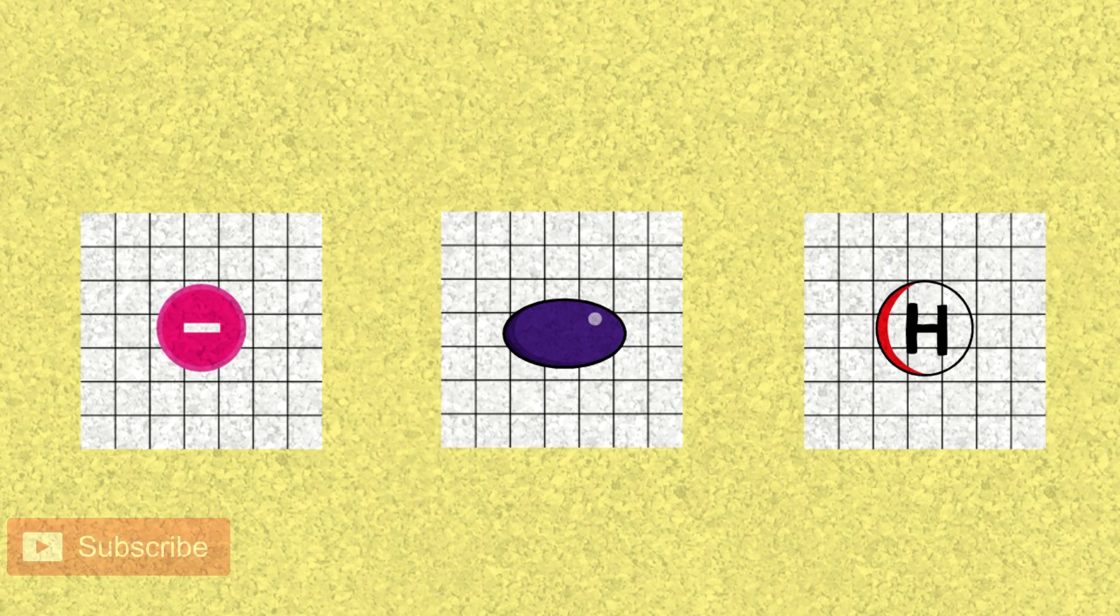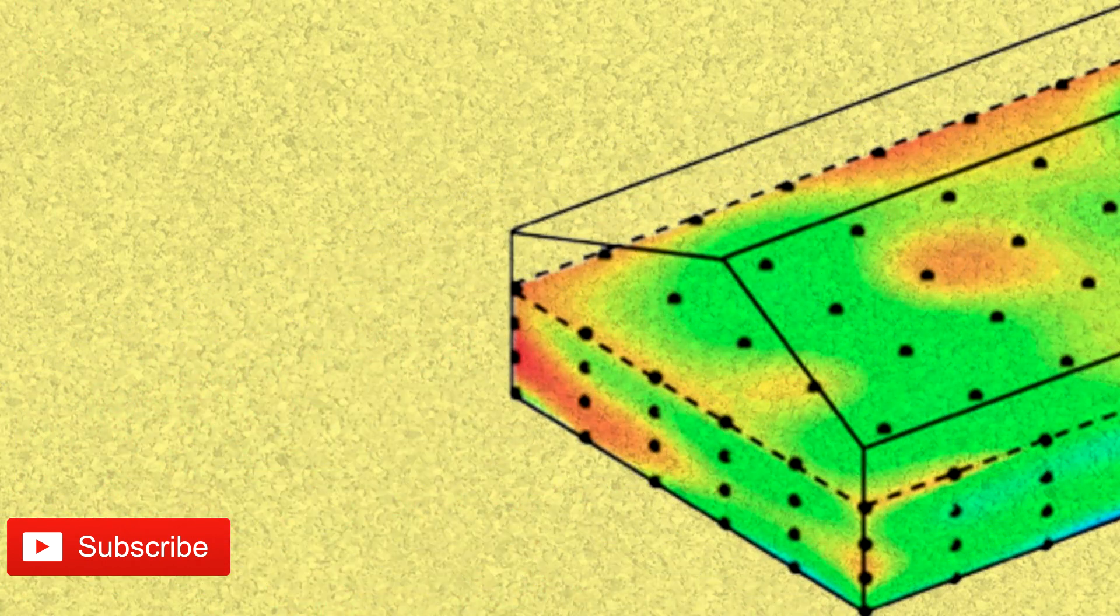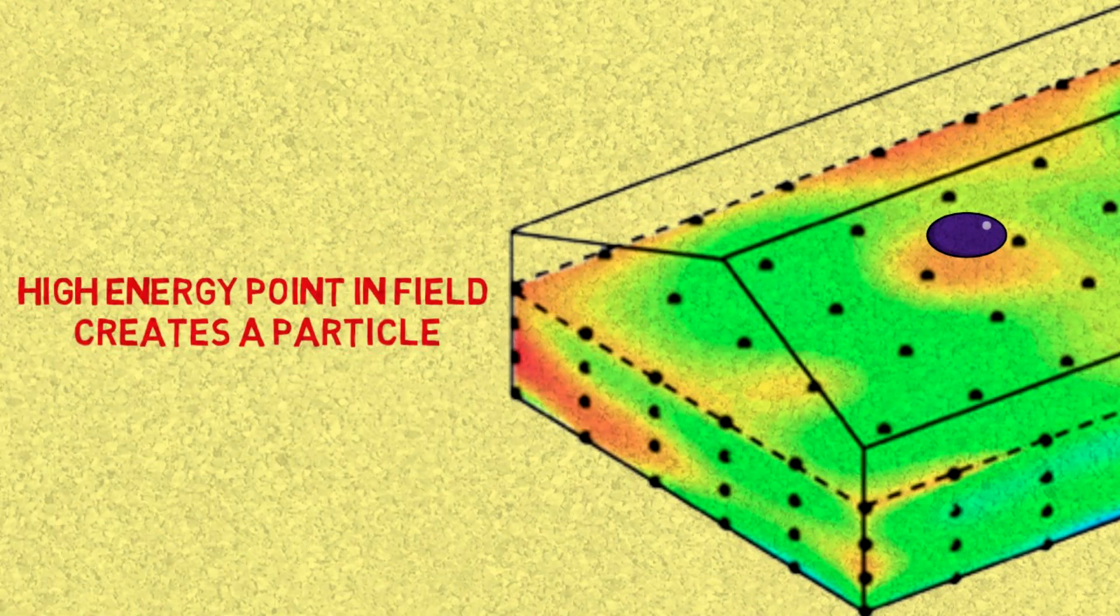Particles are excitations, or a spike in energy of a field. When a point in that field has a spike in energy, the particle exists in that point. When the energy goes away, the particle disappears.